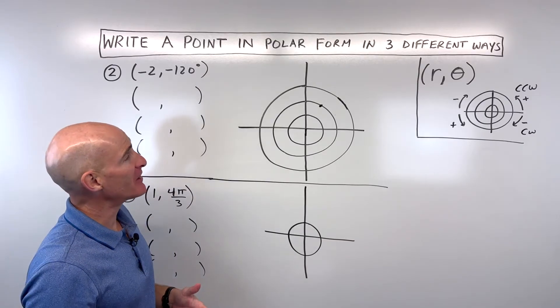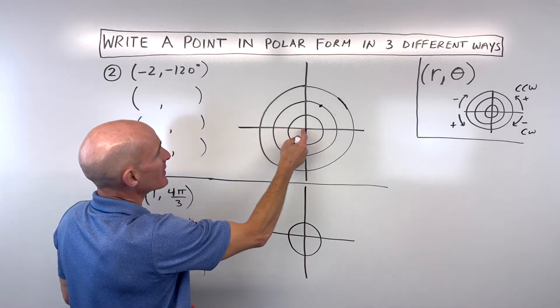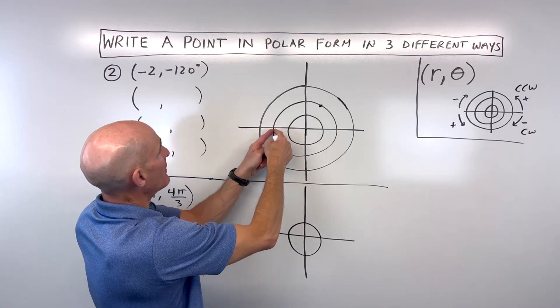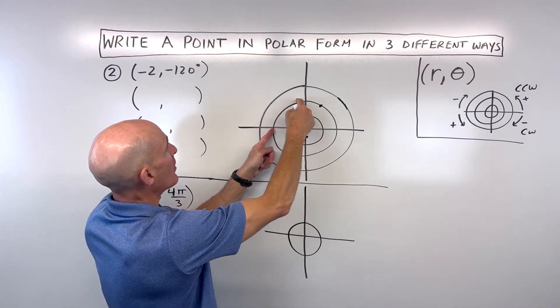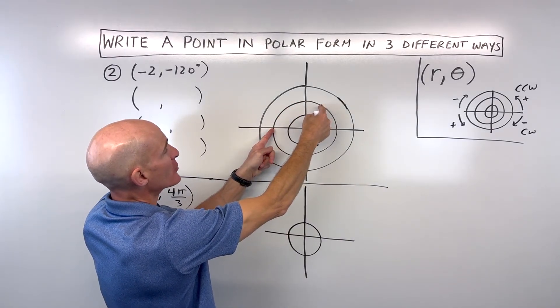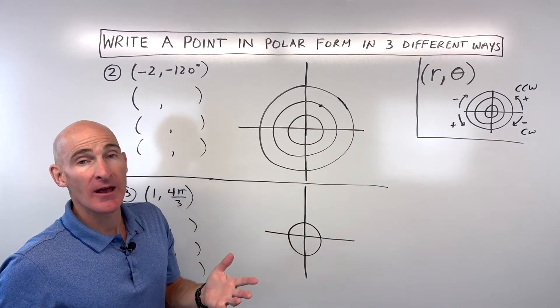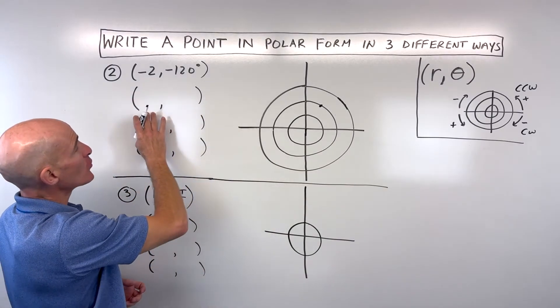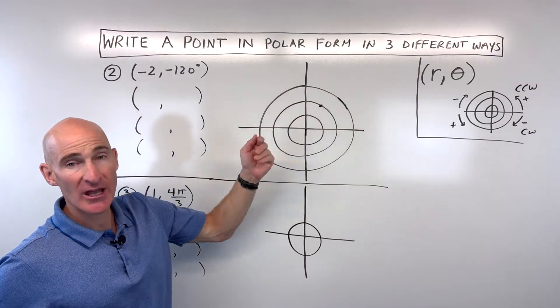I'm not a super big fan of that method. I prefer to think of it as negative. I like to go left two, then rotate, in this case clockwise because it's a negative angle, 120. And that's my location. Either way, you'll get the same result.